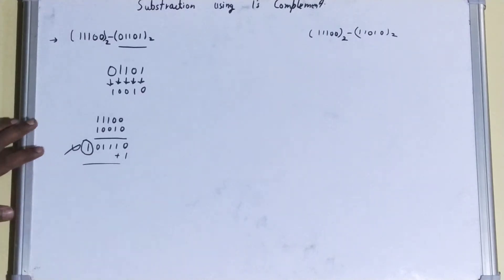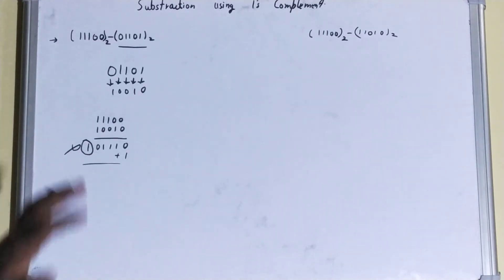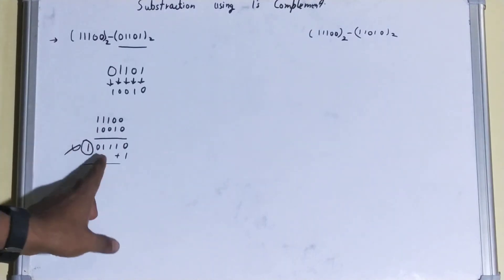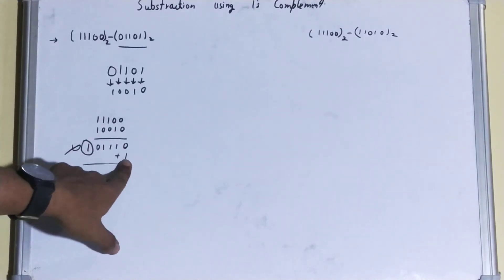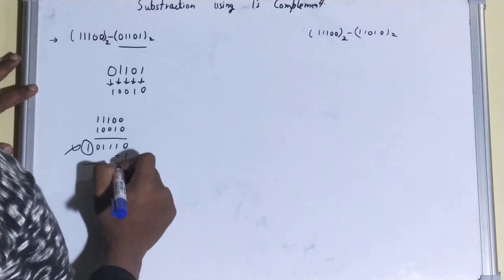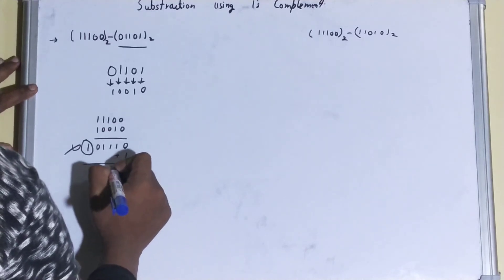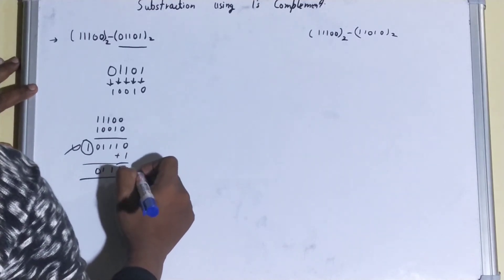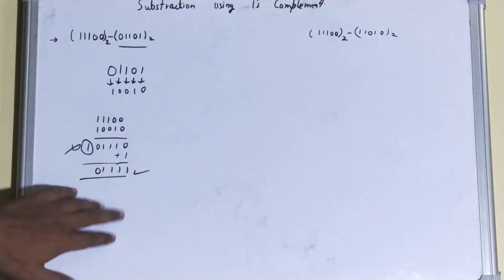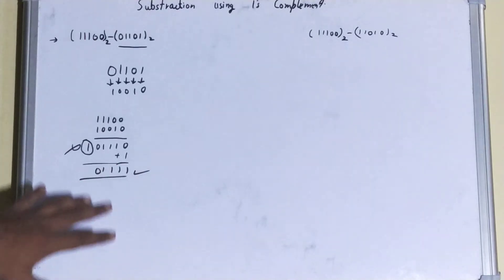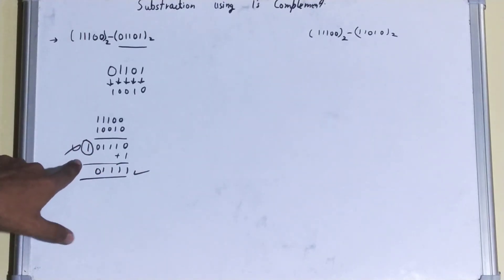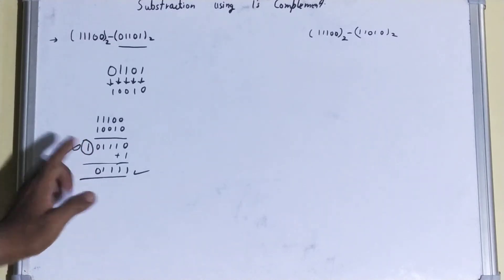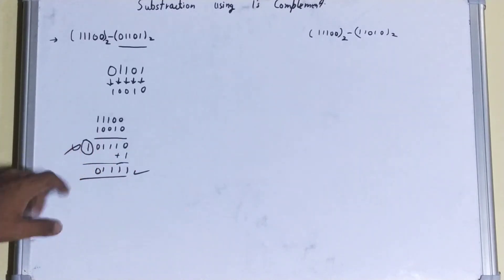In case of a carry, what we do is discard that extra carry and add 1 to the result. So our answer becomes 1 1 1 1 0. This is your answer for the first case. If you get a carry in your addition, discard that carry and add 1.